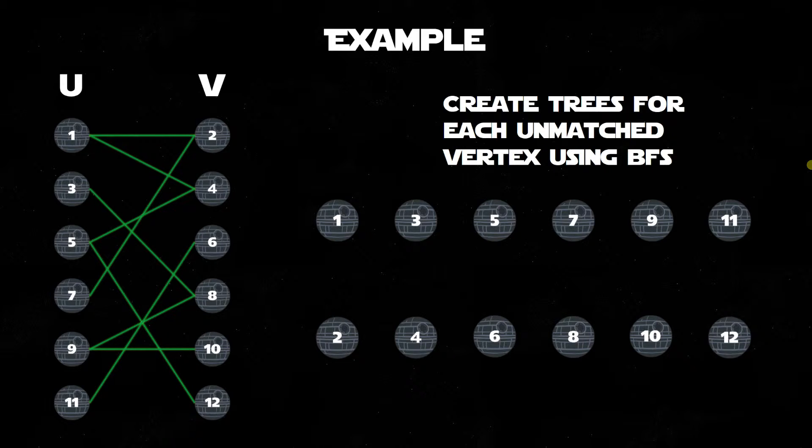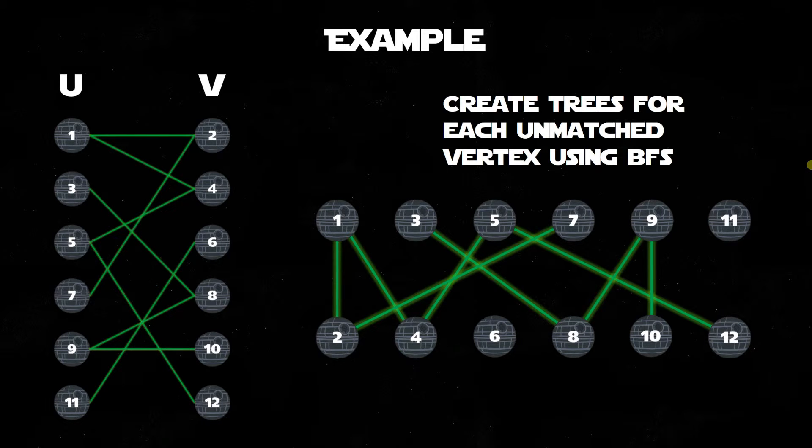We then create trees for each unmatched vertex using breadth-first search, starting with the first free vertex, 1, which matches to 2 and 4. We then continue as such until we reach our last free vertex, 11, which matches with 6.